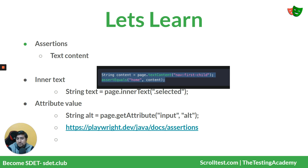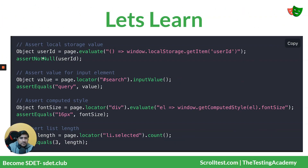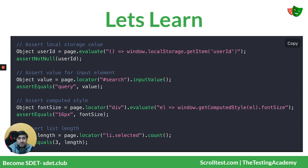So we have textContent, getAttribute, and innerText — these three are really important. There is also another function called page.evaluate. Evaluate basically means you can run any kind of JavaScript function on the page. For example, we are running an anonymous arrow function using window.localStorage.getItem to automatically fetch a local storage item.